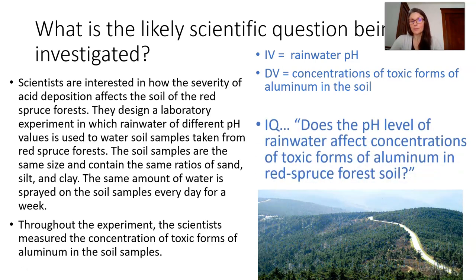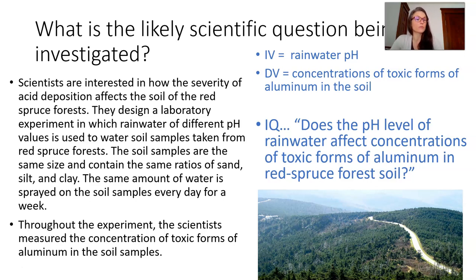A possible question you could come up with then is: does the pH level of rainwater affect concentrations of toxic forms of aluminum in red spruce forest soils? There are other options, but that's just a great example.